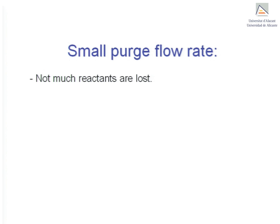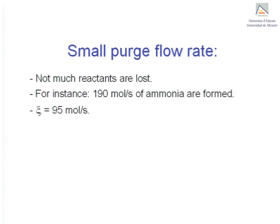Therefore, the flow rate of ammonia will be very similar to what it was in the absence of inert. So say instead of 200 moles a second of ammonia, that 190 moles a second are formed. This implies an extent of reaction of 95 moles a second. If the single pass conversion is kept at 62.5%, then this is what the situation will look like.